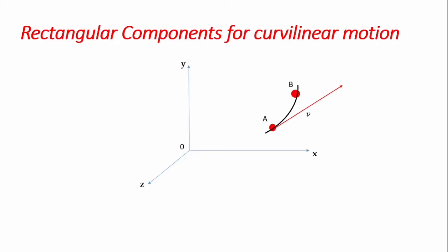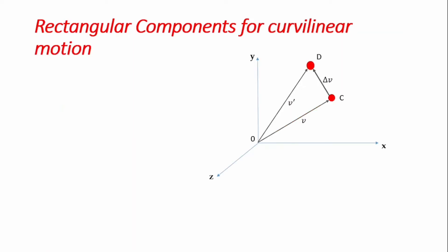When the particle moves to point B we have another velocity v′. If we represent these velocities by vectors drawn from the origin of the coordinate system, the difference between the two velocities — the initial velocity v and the current velocity v′ at point B — is Δv. Tagging these two points C and D, the particle was at point C when time was t and at point D at time t plus Δt, so it took an interval Δt for the particle's velocity to change by Δv.